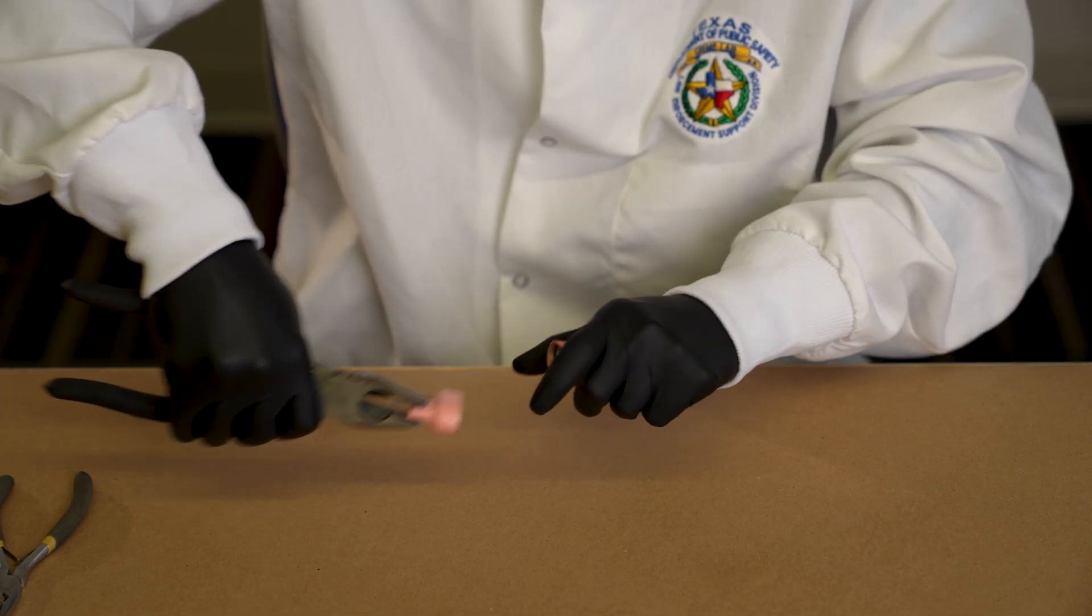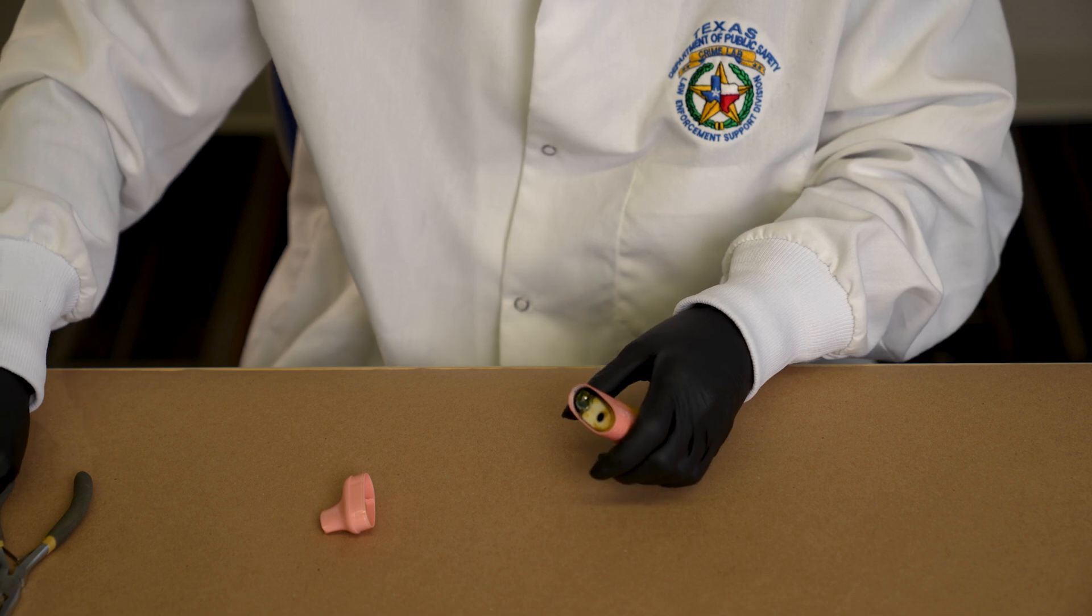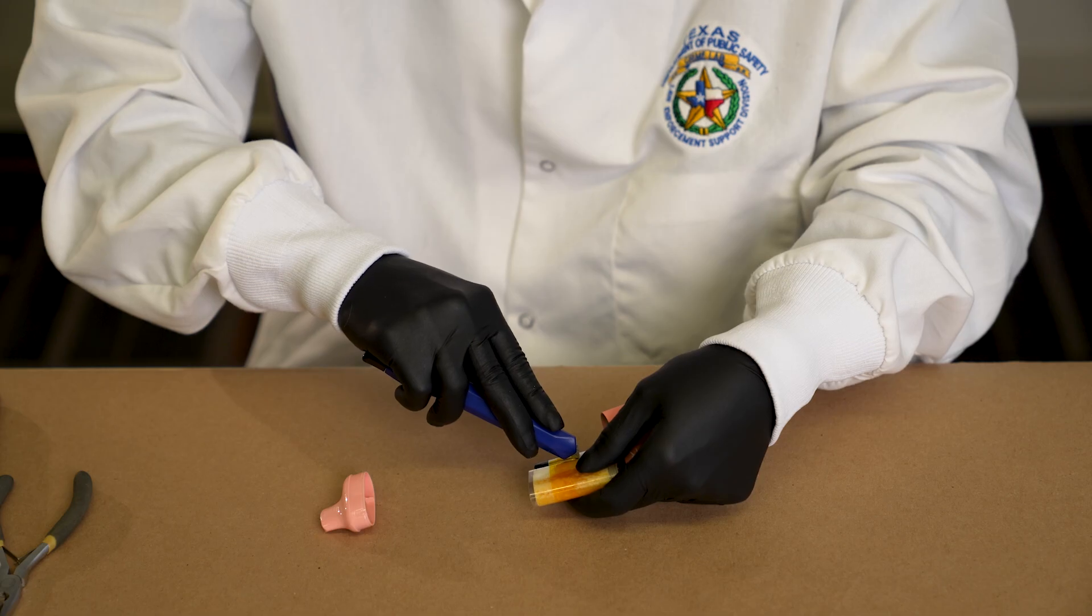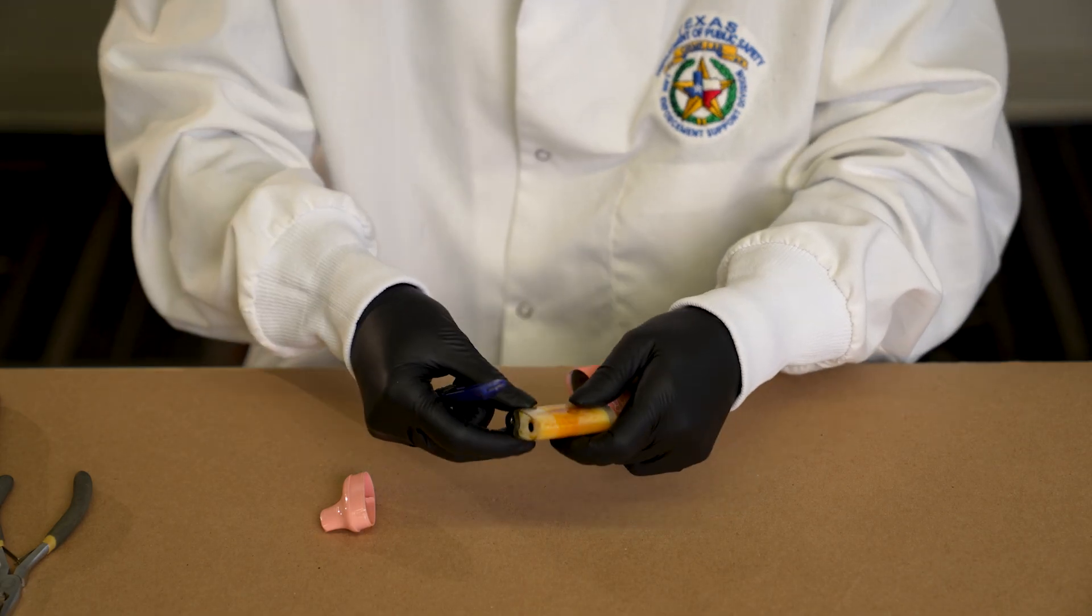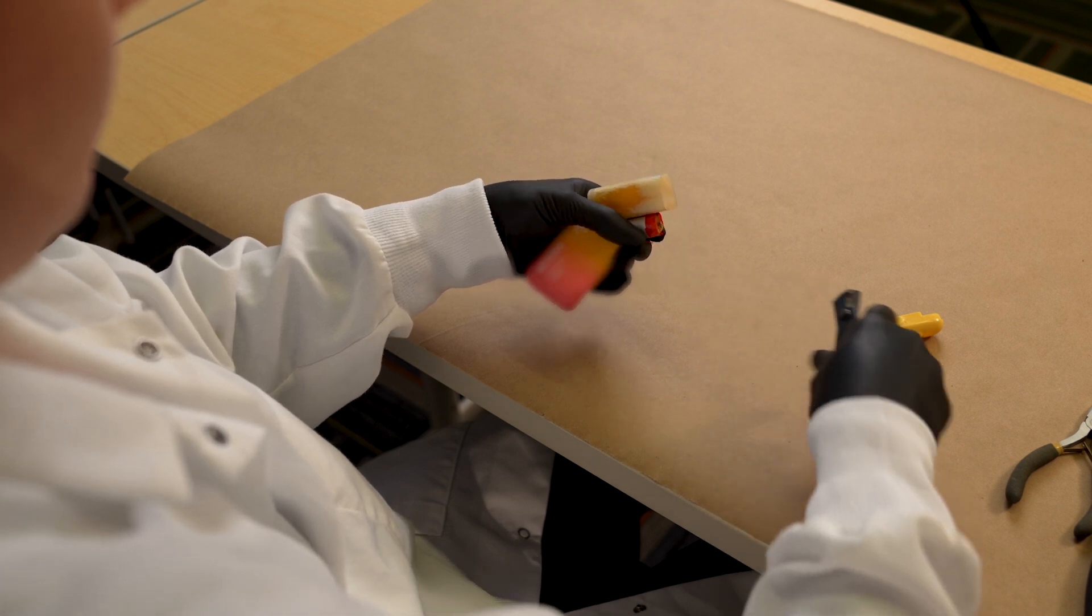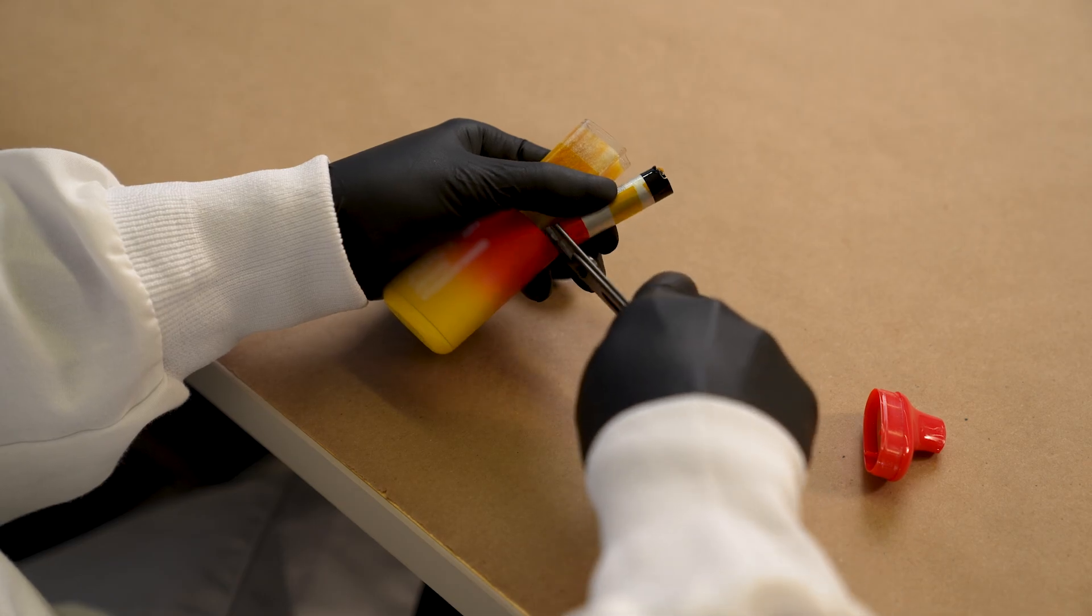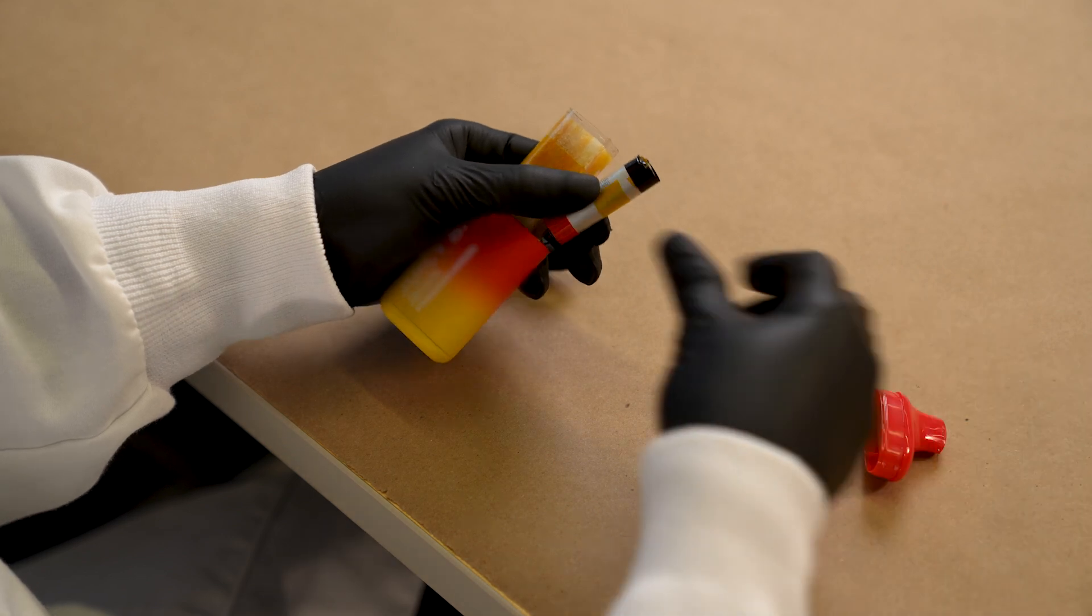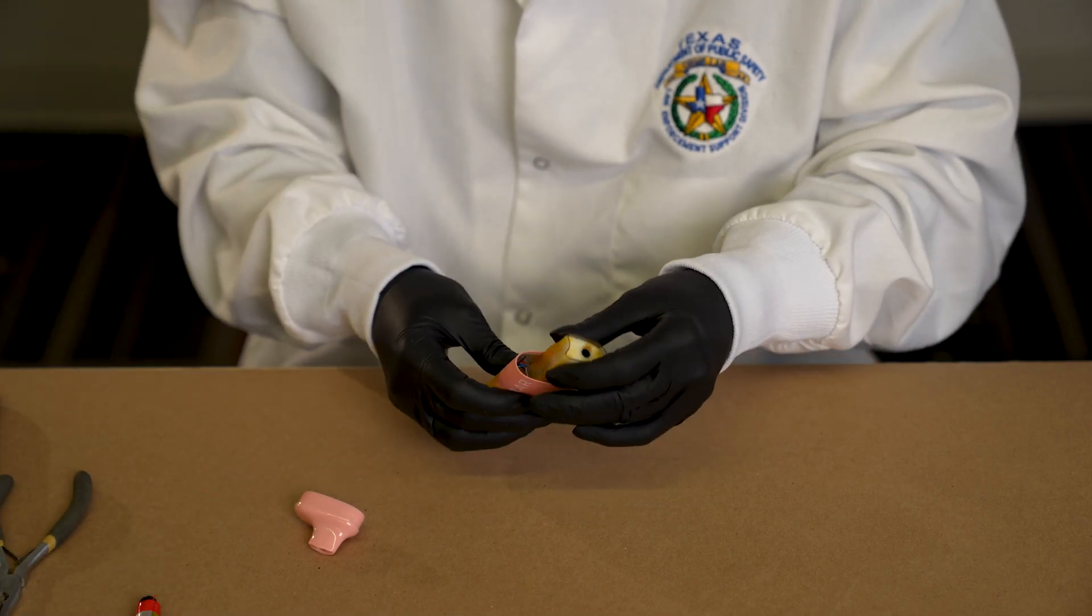Start by removing the mouthpiece. That will allow access to the battery and vape liquid. Cut the tape to allow access to the battery. Cut the leads to the battery and remember to cut the leads short to prevent them from touching and sparking. Put the vape juice and inner material back into the vape device for submission.